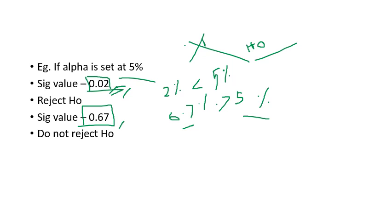If we draw a curve, this would be our 5%. This is what we call as the acceptance region. And this is what we call the rejection region for our H0. In the first scenario, it comes here. And in the second scenario, it comes here.